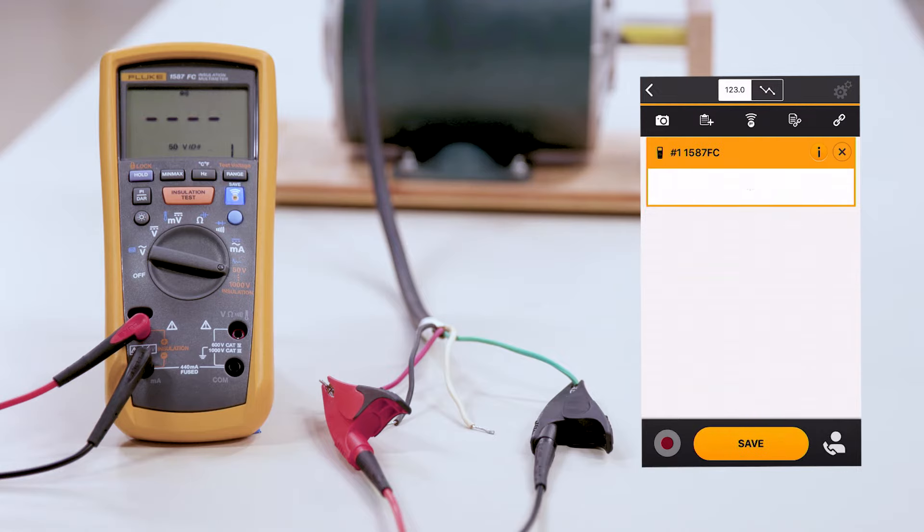Typically, in an insulation test, we want to double the value of whatever the rating is for voltage. In this case, this motor is a 480 volt motor. We're going to change the range of our insulation meter to 1000 volts.